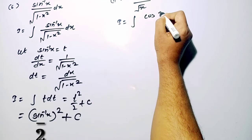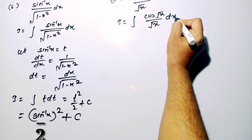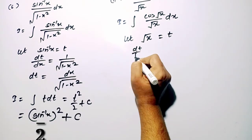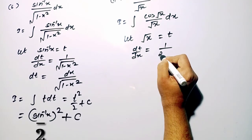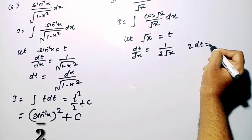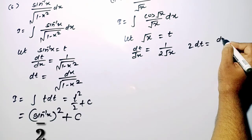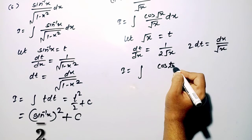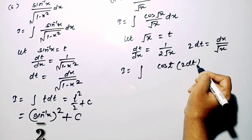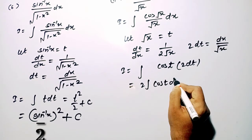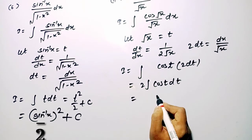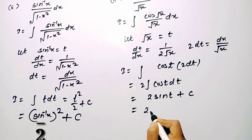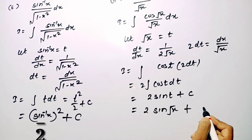The next question is cos root x divided by root x dx. We consider root x equal to t, so dt by dx equals 1 upon 2 root x, meaning 2 dt equals dx upon root x. Substituting, I equals integration of cos t times 2 dt, which is 2 times integration of cos t dt. Integration of cos t is sin t, so the answer is 2 sin(root x) plus c.